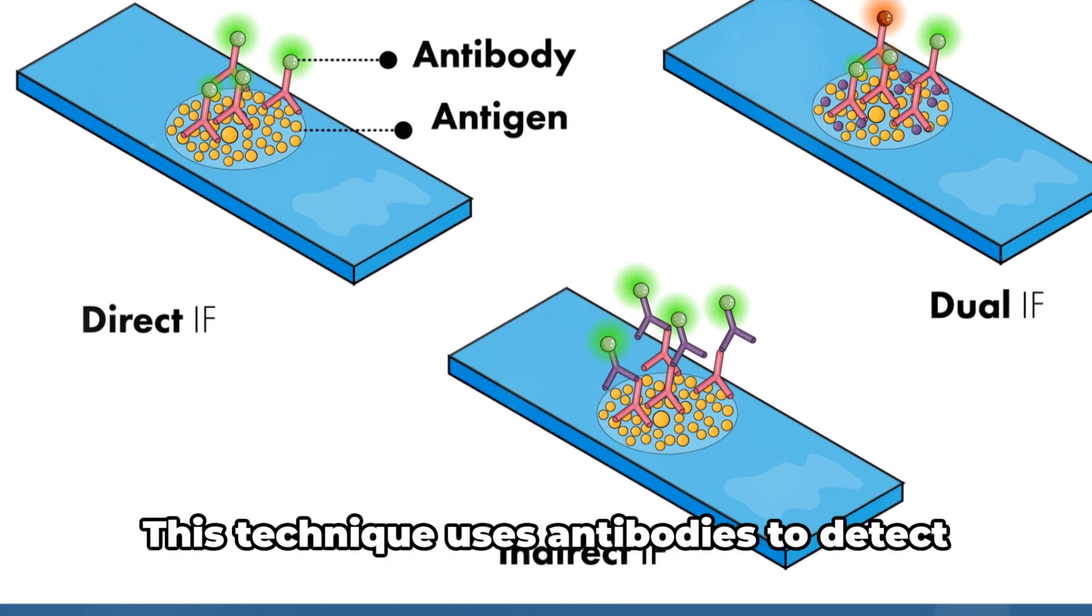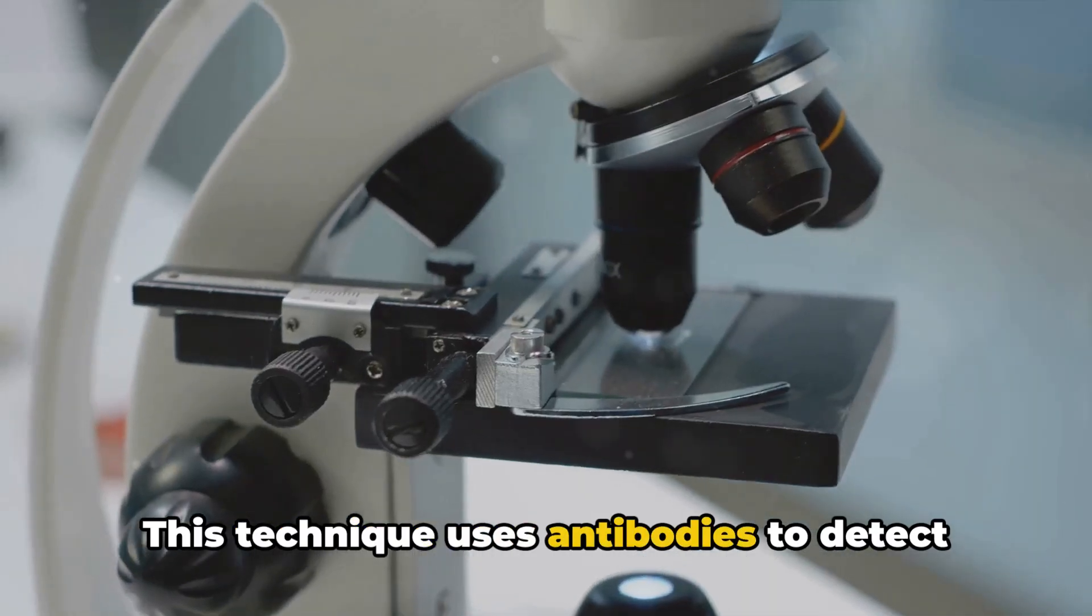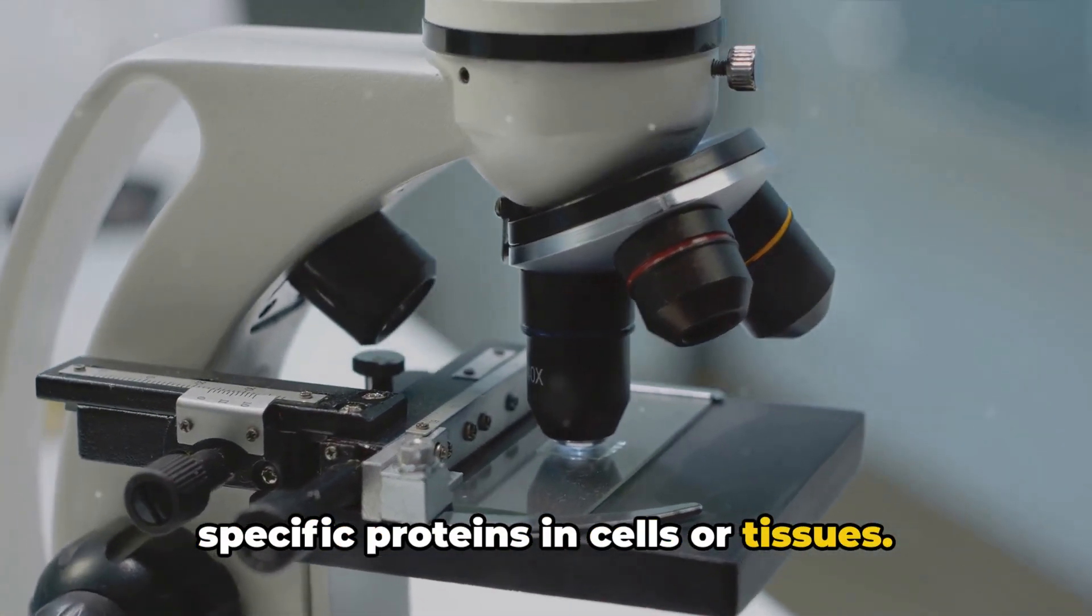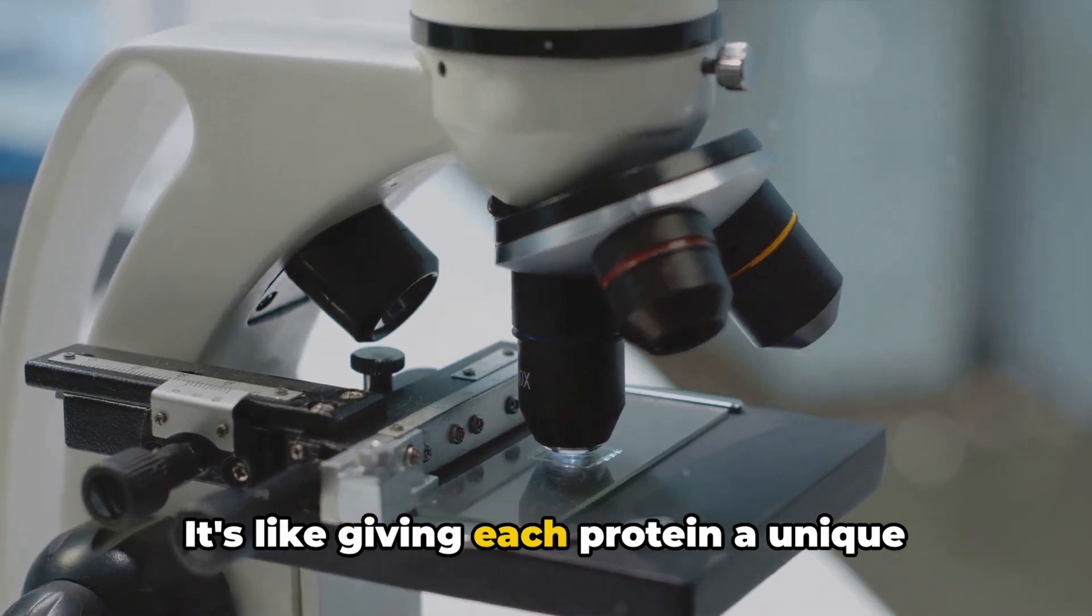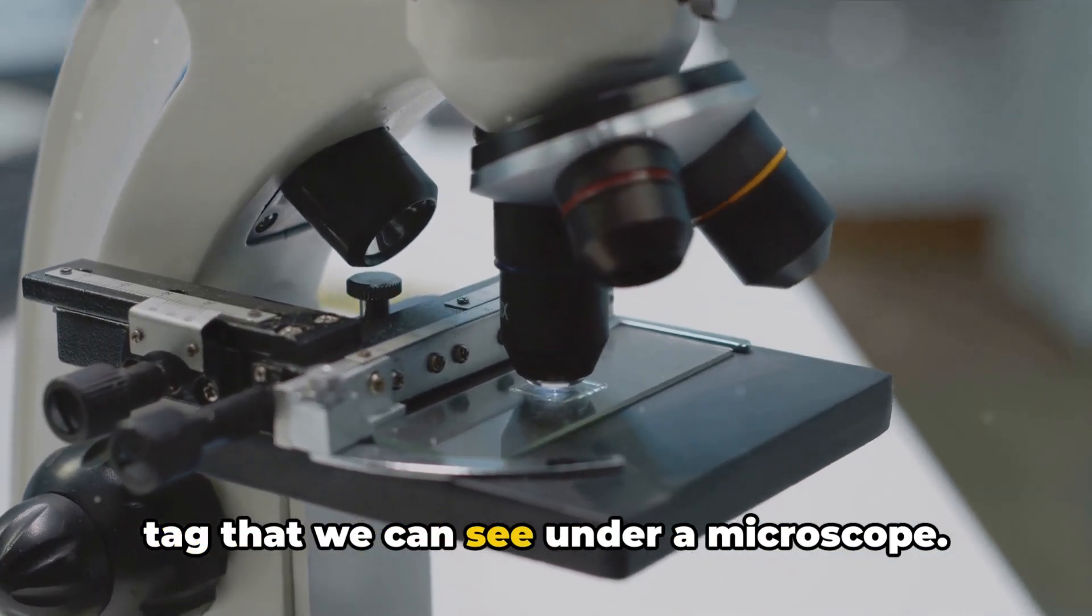Then we have immunohistochemistry. This technique uses antibodies to detect specific proteins in cells or tissues. It's like giving each protein a unique tag that we can see under a microscope.